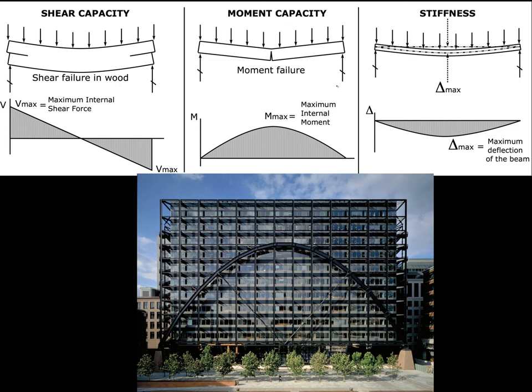We're going to start by focusing on this issue of moment capacity. In a simple span beam under a uniform load, we have an internal influence called the moment, and the moment is what produces those bending stresses — high compression on the top and high tension on the bottom — which can result in a tensile fracture on the bottom or some kind of compression failure on the top.